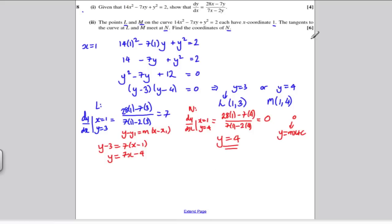Now, going back to the question, it was asking us when the tangents meet. They meet at this coordinate N. So we're trying to solve the two simultaneous equations. I'll change my pen again. y = 7x - 4, equation 1, and y = 4, equation 2.